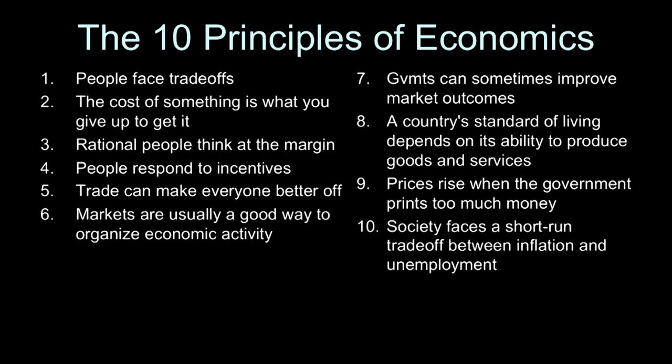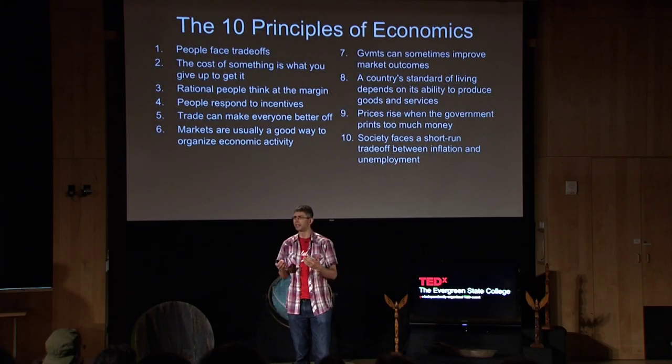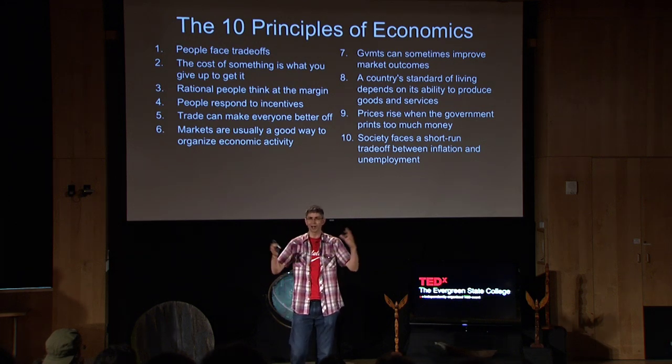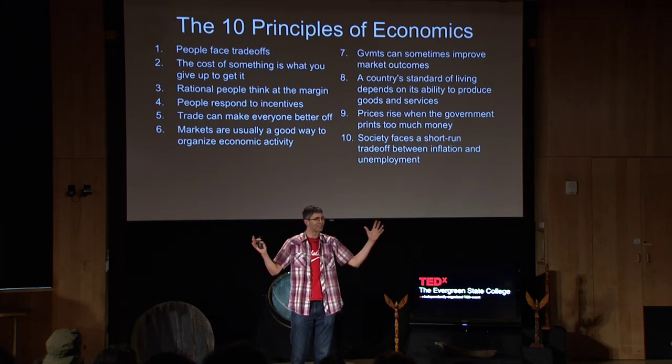Fortunately, I have a PhD in economics, so I've taken it upon myself to translate these principles for the more fortunate among you. We're going to begin by separating them into the first seven principles, which are microeconomics, and the last three, which are macroeconomics. The difference, as P.G. O'Rourke said, being that microeconomists are wrong about little things and macroeconomists are wrong about things in general.